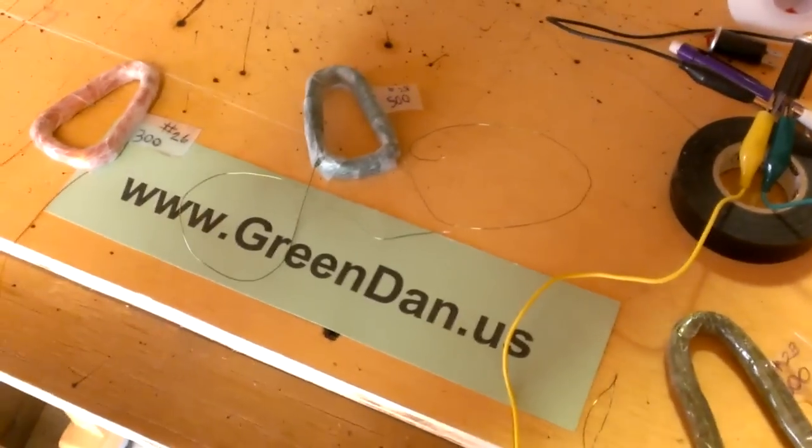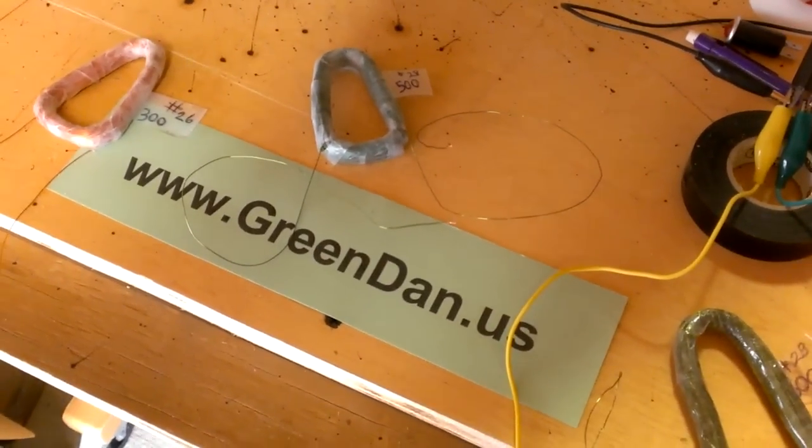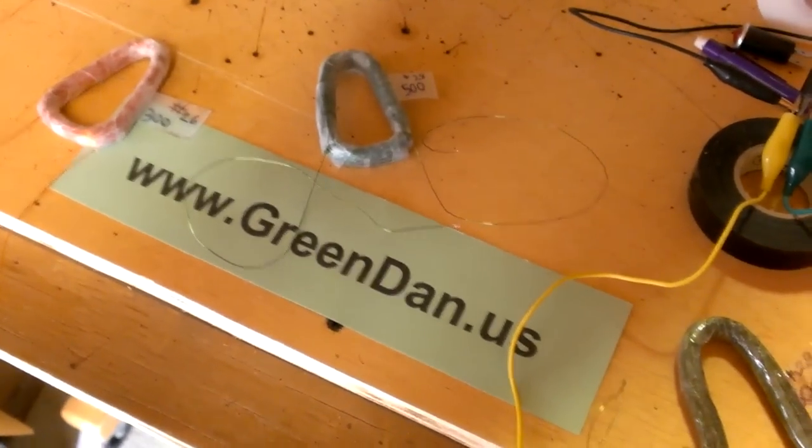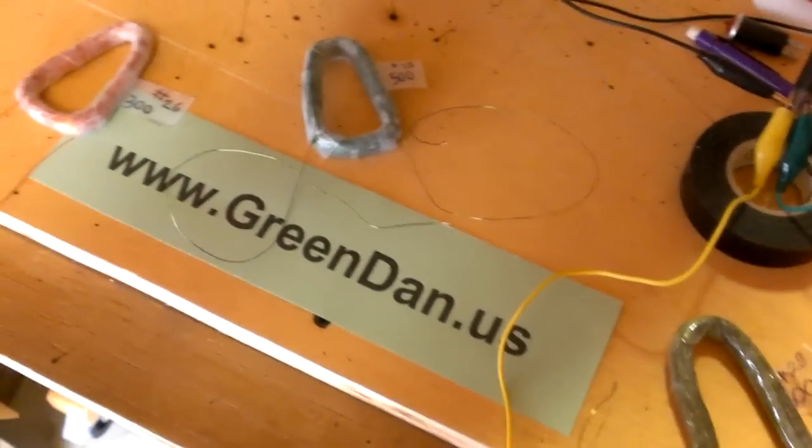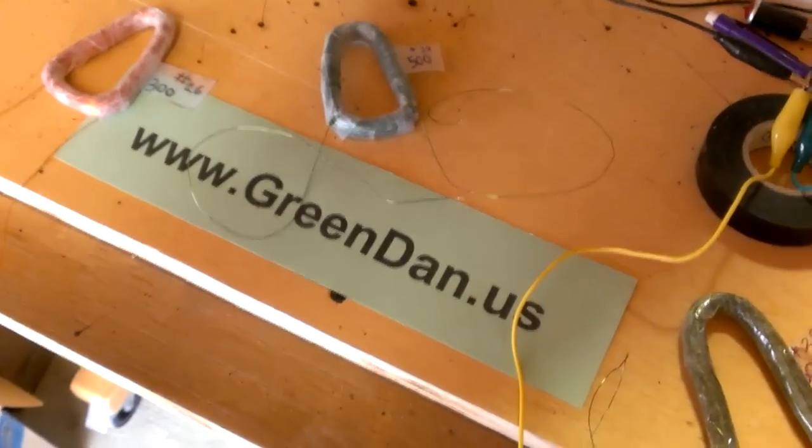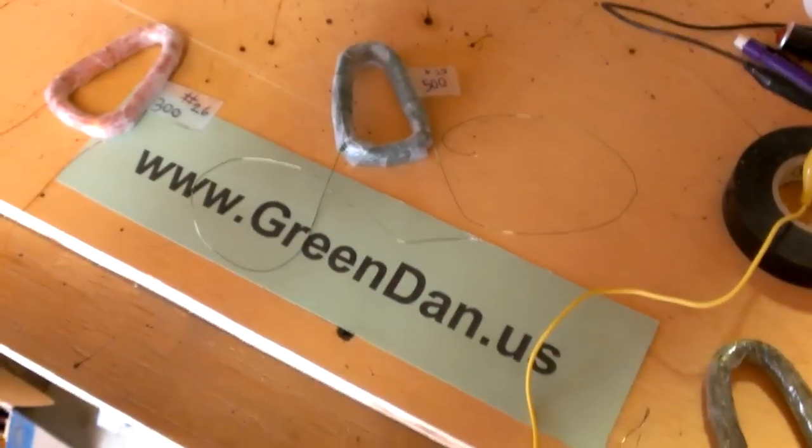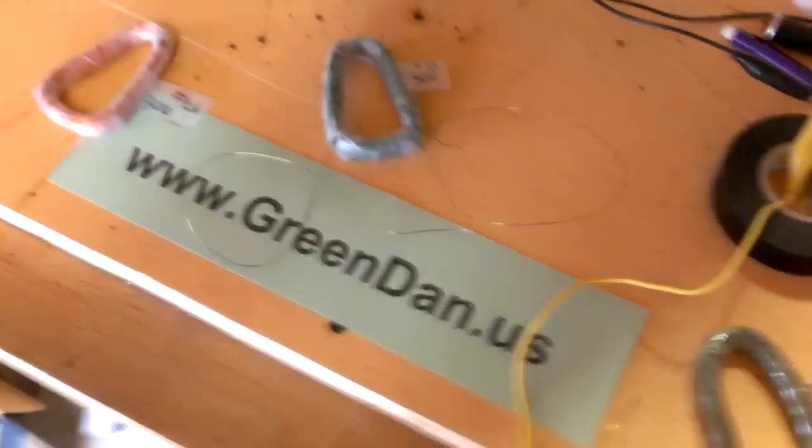Hi there, this is Green Dan. This short video is going to show the difference in voltage made with coils that have relatively the same shape. They're wrapped with the same gauge wire. They're wrapped in the same number of wraps. But one of them happens to be a little bit larger because it has longer straight edges, and I will explain that.